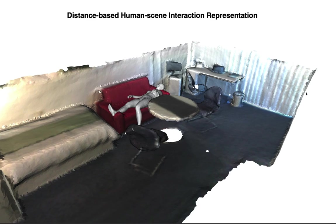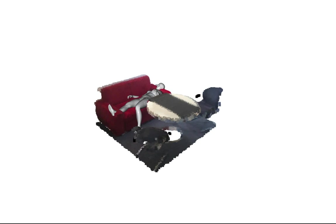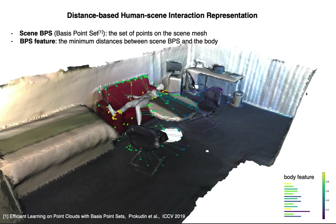We propose a distance-based human-scene interaction representation, given the mesh of a scene and body pair. Only the scene around the human body is most relevant for the interaction, therefore we only consider a local region. We select a set of basis points on the scene mesh called scene-bps. Then we use the minimum distances between the scene-bps and the body to represent the body-scene contact relation, which is the body-bps feature. The body feature can then be considered as a pairwise relation between the body and the environment.